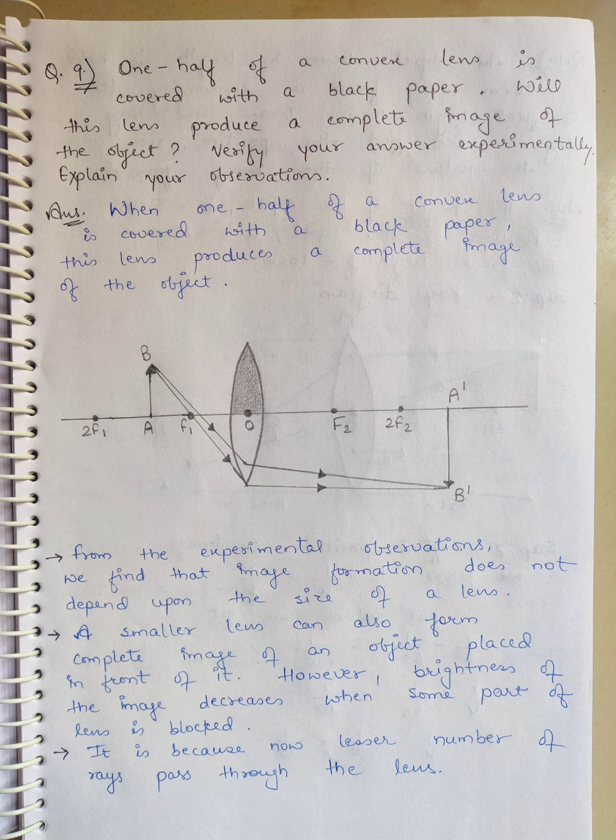Half of the rays will pass through, so the brightness will decrease. It is because now a lesser number of rays pass through the lens. Because the lens is half covered, the rays will be reduced. The image will be complete but the brightness will decrease.